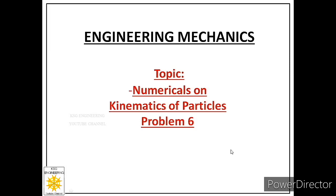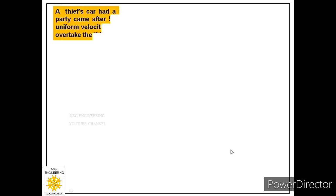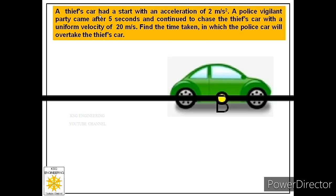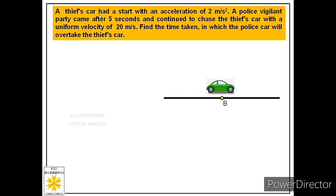Welcome students. Today we will solve the 6th problem of kinematics of particles. So let us start today's lecture and read the statement. A thief's car had a start with an acceleration of 2 meter per second square. A police vigilant party came after 5 seconds and continued to chase the thief's car with a uniform velocity of 20 meter per second. Find the time taken in which the police car will overtake the thief's car.